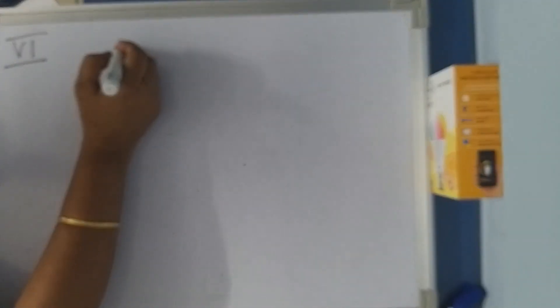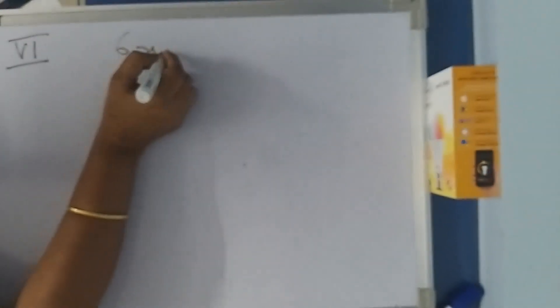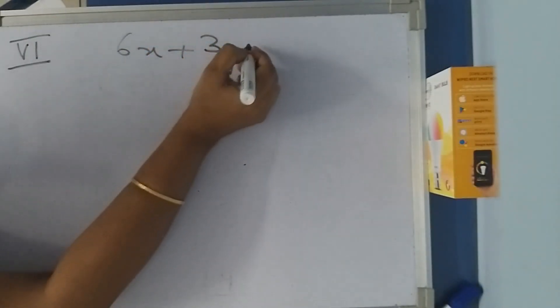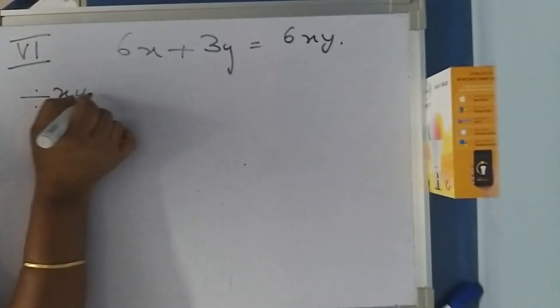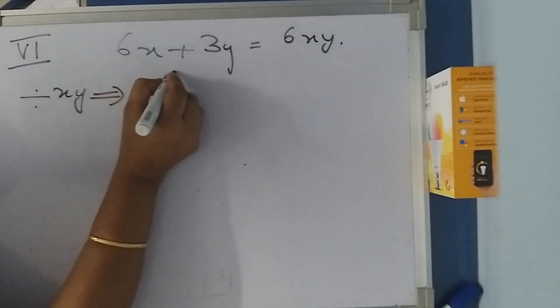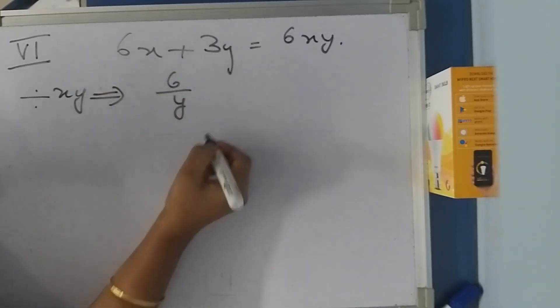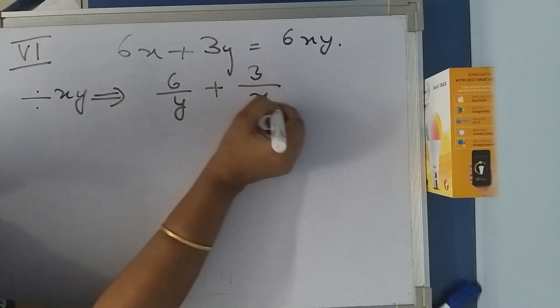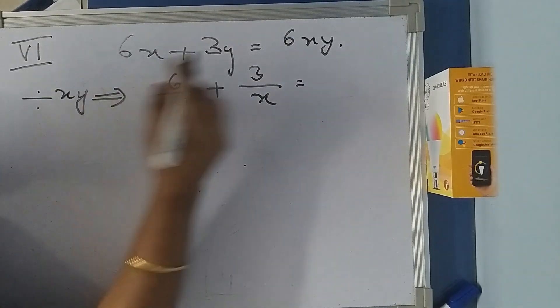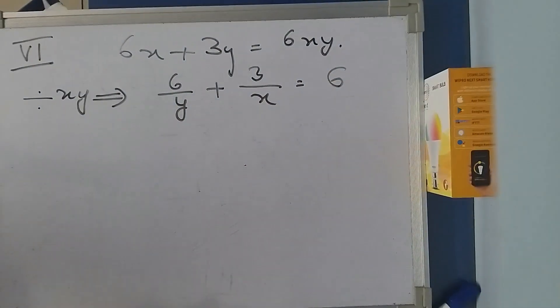Question 6 is 6x + 3y = 6xy. I am dividing throughout by xy. What do I get? 6x/xy would be 6/y, plus 3y/xy becomes 3/x, equals 6xy/xy, which is 6.